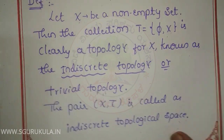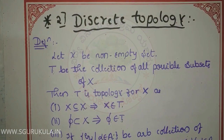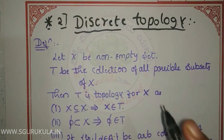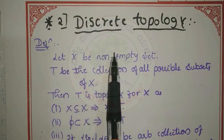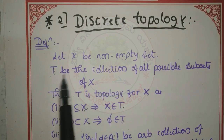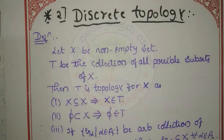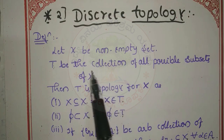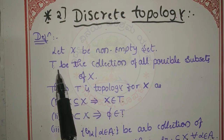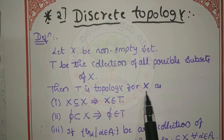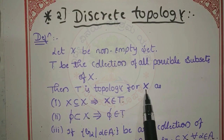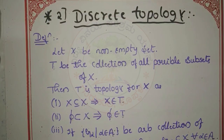Next, let us look at Discrete topology. The definition: let X be a non-empty set and T be the collection of all possible subsets of X — that is, the power set of X. We apply four conditions for that.